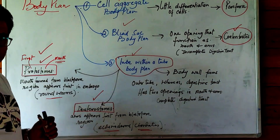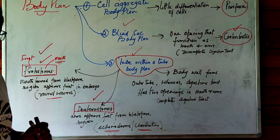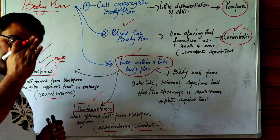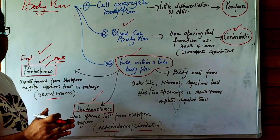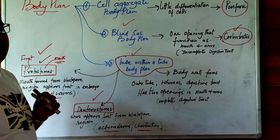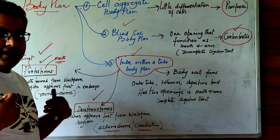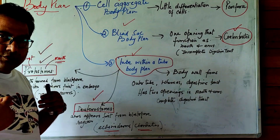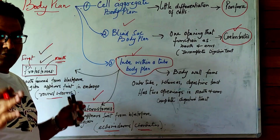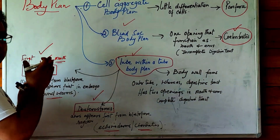In deuterostomes, the anus forms first from the blastopore region, and the mouth is formed later. Higher organisms — echinoderms and chordates — are deuterostomes. So we as higher chordates are deuterostomes. From echinoderms onward, all organisms are mostly deuterostomes, whereas roundworms are protostomes.